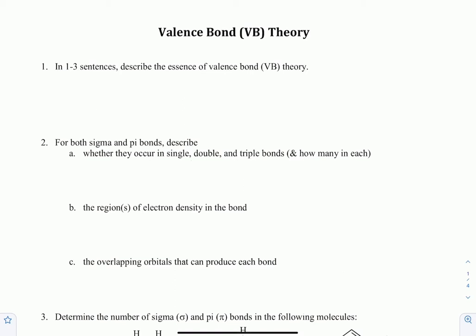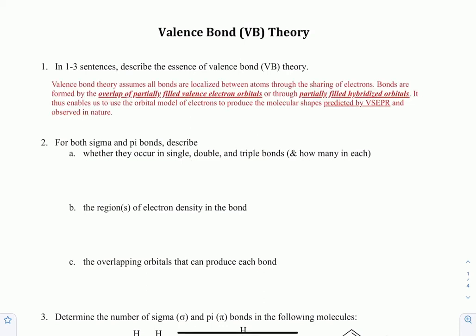Valence bond theory is one of the two theories of bonding you'll learn in this class. These theories explain covalent bonds at the molecular and atomic levels. This is the first one; we learn molecular orbital theory later, which actually trumps this theory. Valence bond theory assumes that all bonds are localized between atoms through the sharing of electrons. Bonds are formed by the overlap of partially filled valence electron orbitals or partially filled hybridized orbitals.